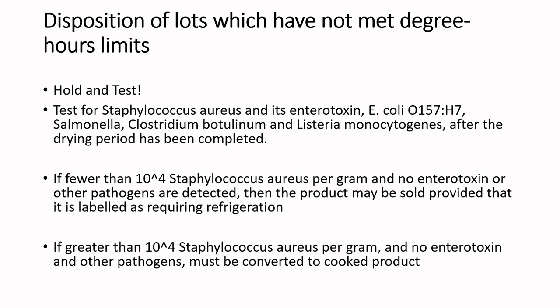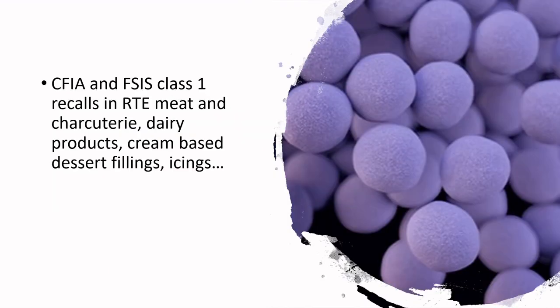If results show fewer than 10⁴ (10,000) Staph aureus per gram, no enterotoxin, and no other pathogens, you can sell the product — but it must be a refrigerated product. If Staph aureus exceeds 10⁴ per gram with no enterotoxin and no other pathogens, it must be converted to a cooked product. If any enterotoxin is detected, the product must be condemned and discarded — enterotoxin present means the product cannot be sold under any circumstance.